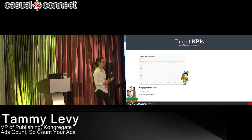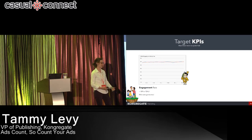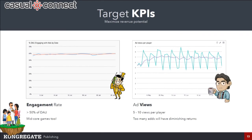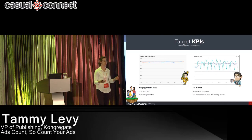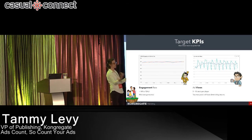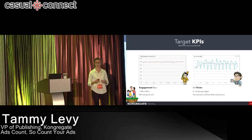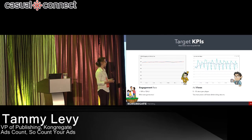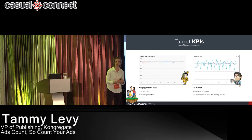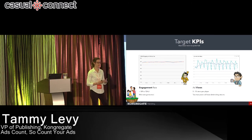Even mid-core games like Animation Throwdown, a CCG where you wouldn't think to add ads, we see 60% of DAU engaging with ads. The next KPI is ad views per player per day. You want somewhere between 5 to 10 ad views per player per day. Once you pass that threshold, you're getting diminishing returns. Balance your game with cooldown timers or surfacing methods to hit that sweet spot of 5 to 10.